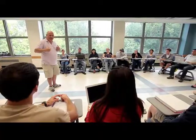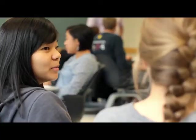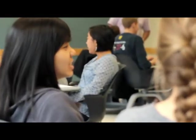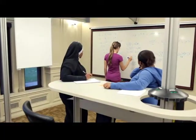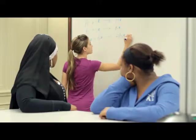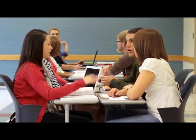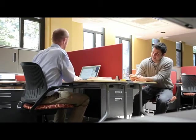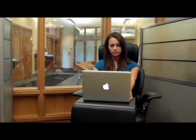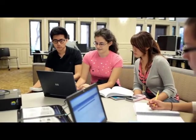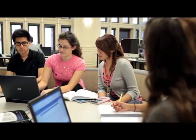The ideal classroom configuration would be one with a lot of flexibility where students can see each other and discussion is possible. Another feature would be lots of public surface for writing — writing surfaces that have the same kind of flexibility as the seating. I hope that in the coming decade or two we see the need to study how technology, the physical environment, furniture, and space play into the way that instructional dynamics take place.